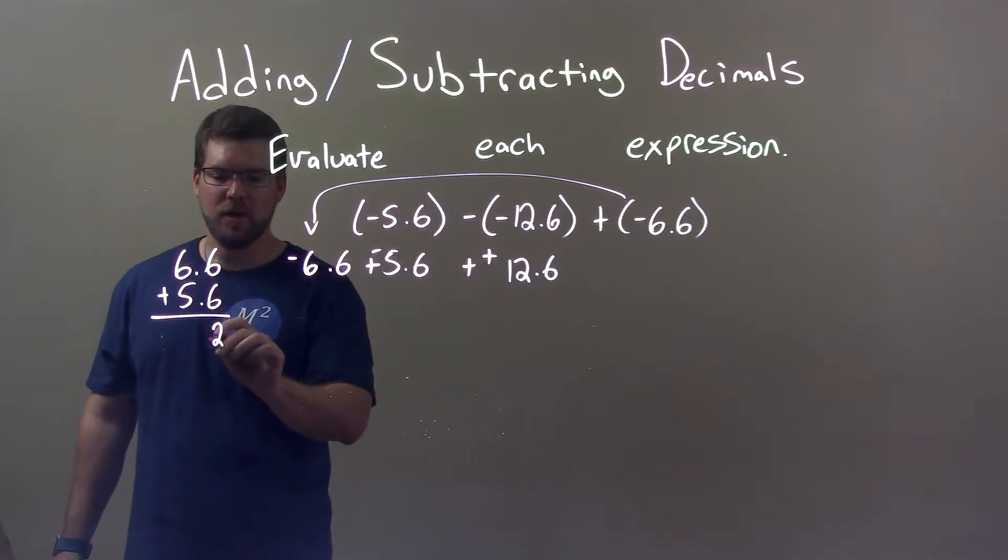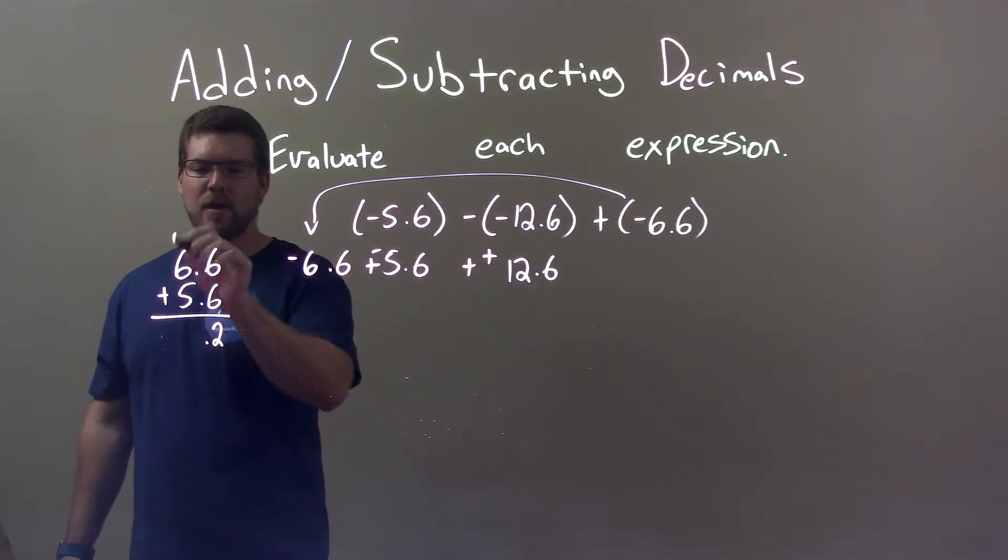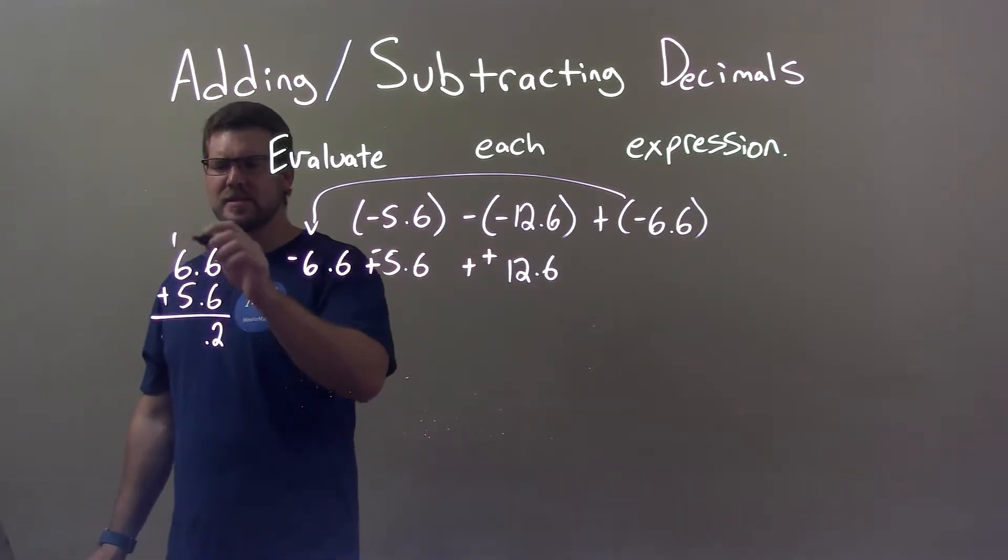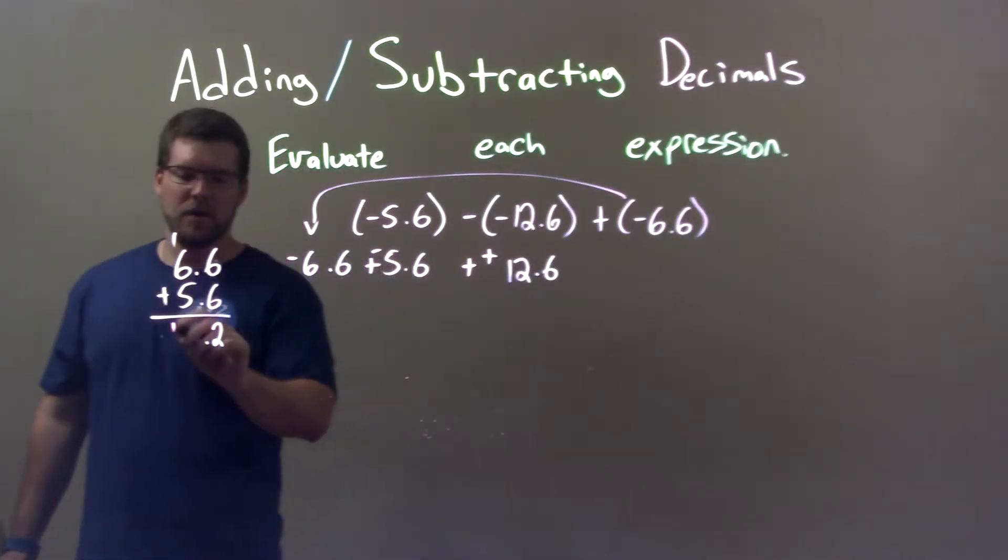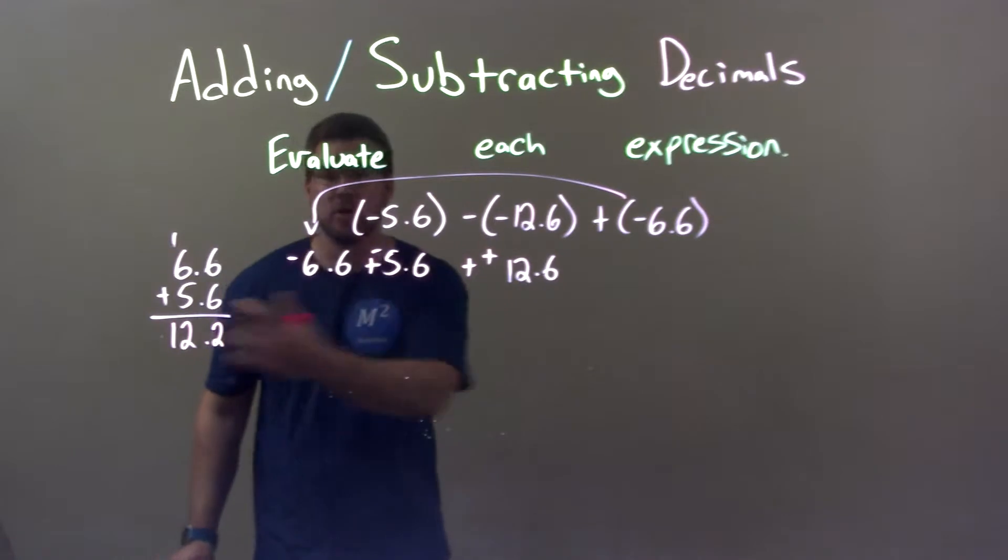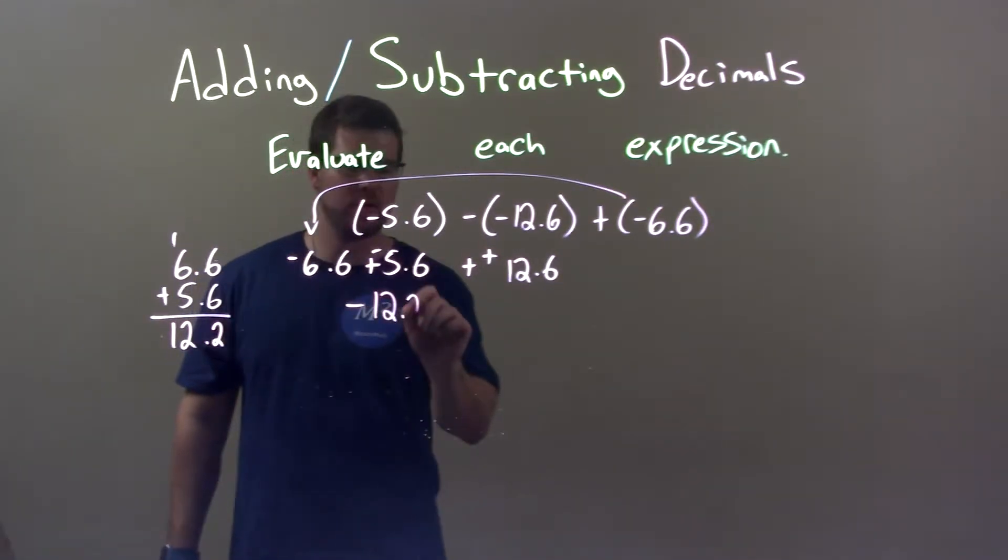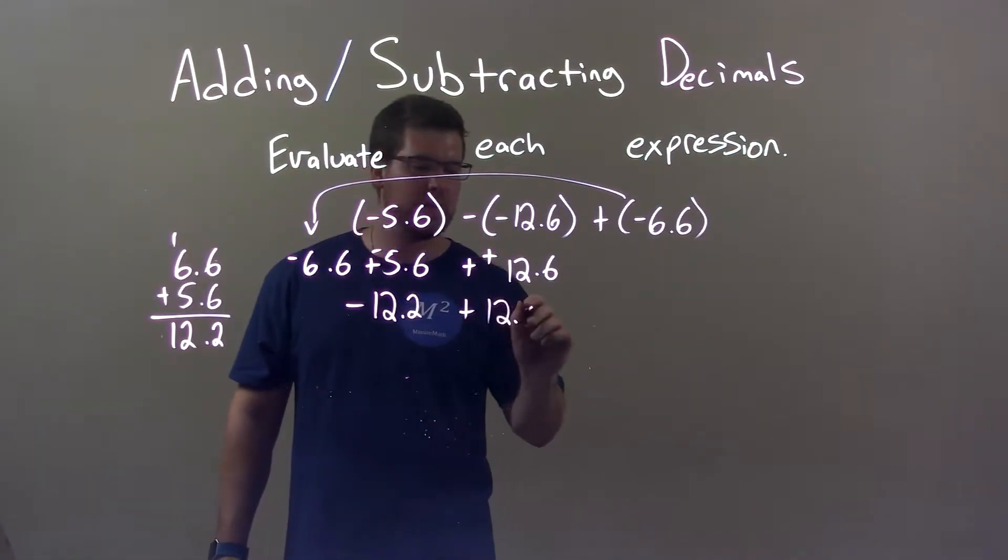6.6, or 6 plus 6 is 12, 2, decimal point lines up, carry the 1. 6 plus, or 6 plus 5 is 11, plus 1 is 12, so we have 12.2. But don't forget, that's negative. So we have a negative 12.2 here, and we have plus 12.6.